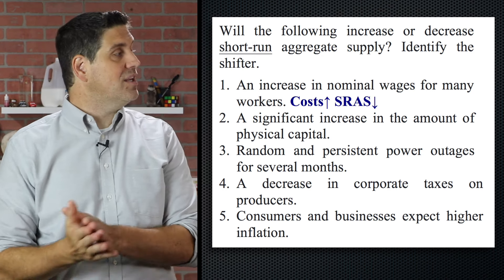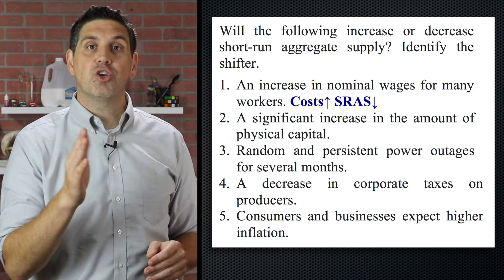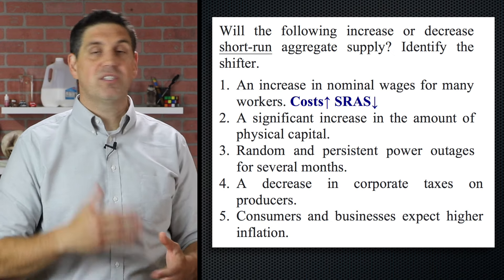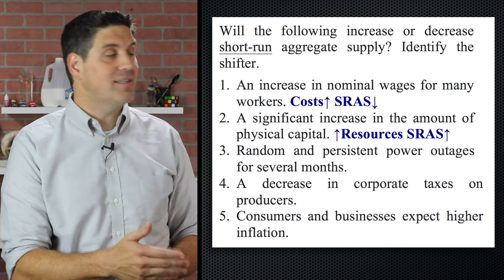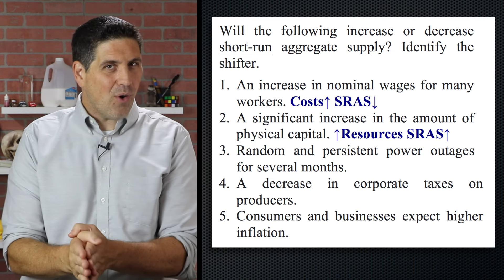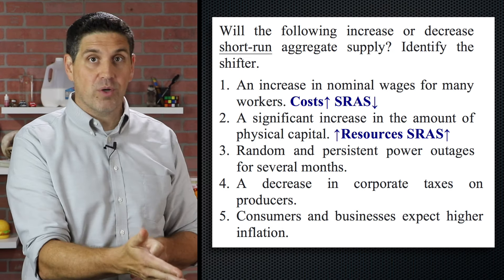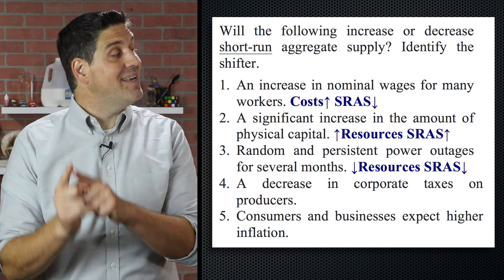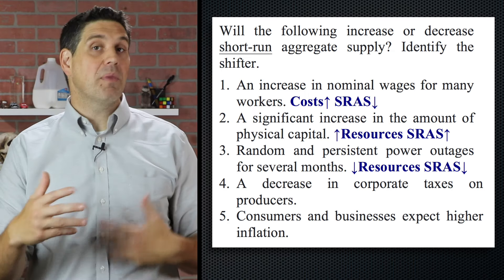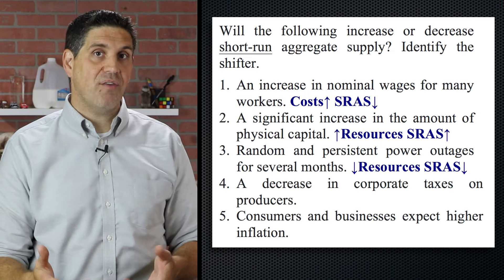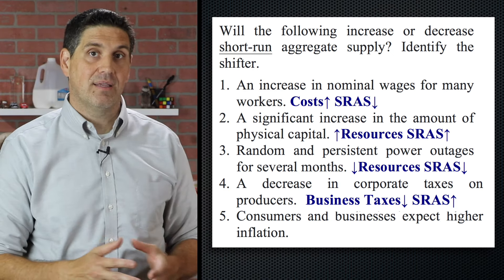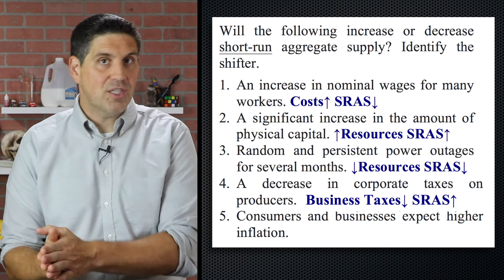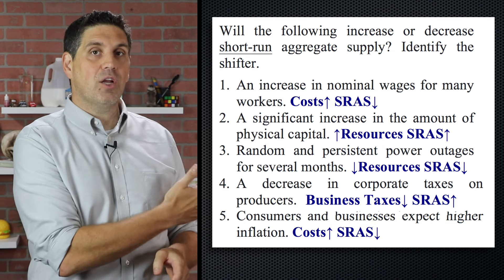If nominal wages increase, that's an increase in the cost of resources, so the short run aggregate supply curve is going to shift to the left. If there's more physical capital, we have more tools and factories to produce more stuff, so short run aggregate supply shifts to the right. If we had power outages, we couldn't produce as much — there'd be less resources available, so aggregate supply decreases and shifts to the left — an example of a negative supply shock. A decrease in corporate taxes means producers have more money to produce more stuff, so aggregate supply shifts to the right. And if people expect higher prices in the future, costs are going to increase for wages and resources, so aggregate supply decreases, shifting to the left.